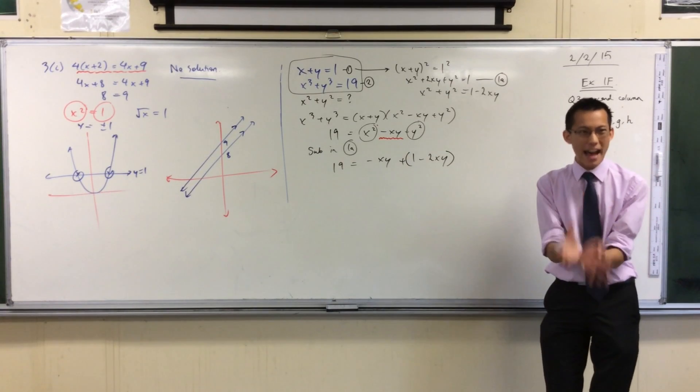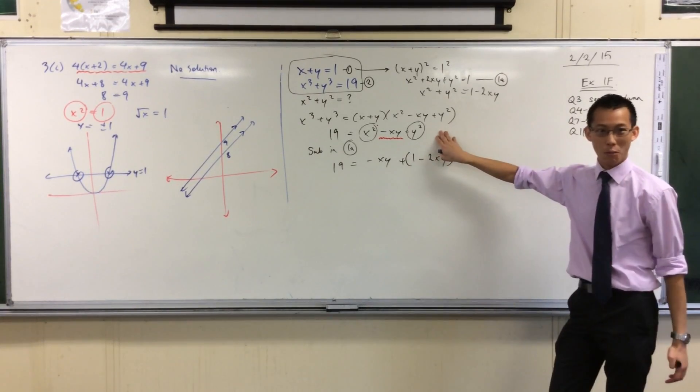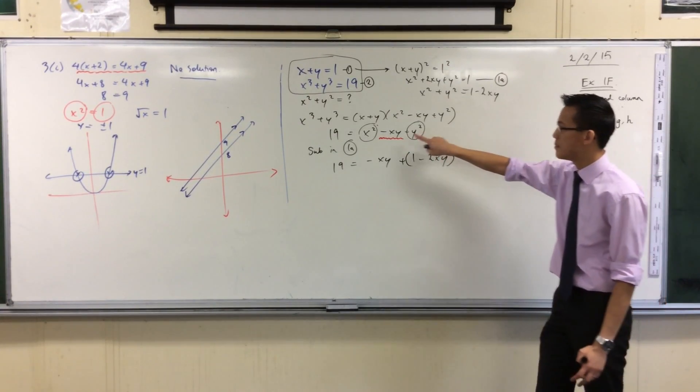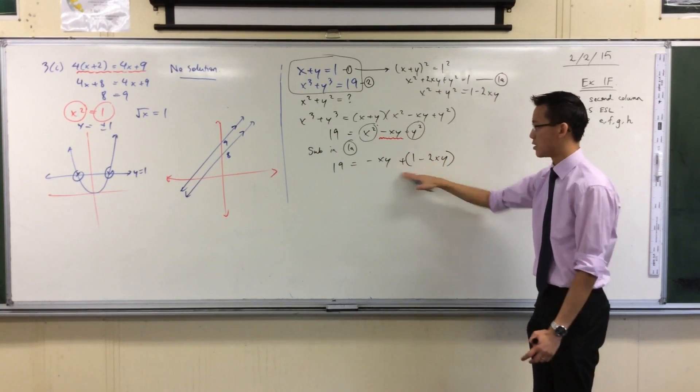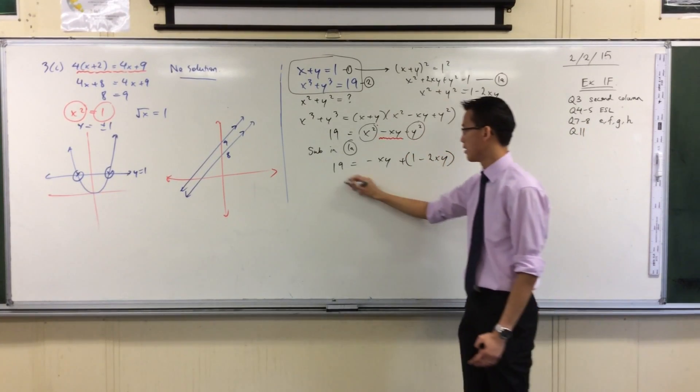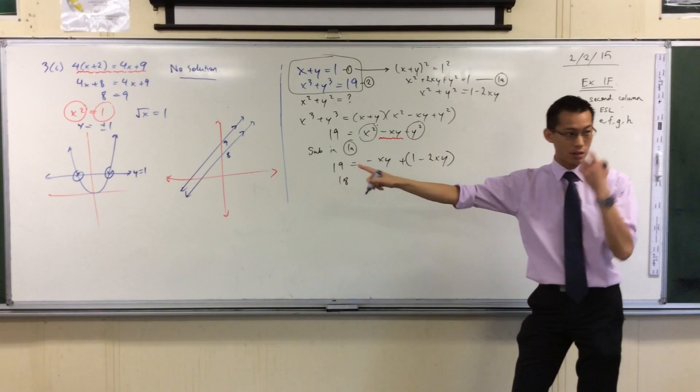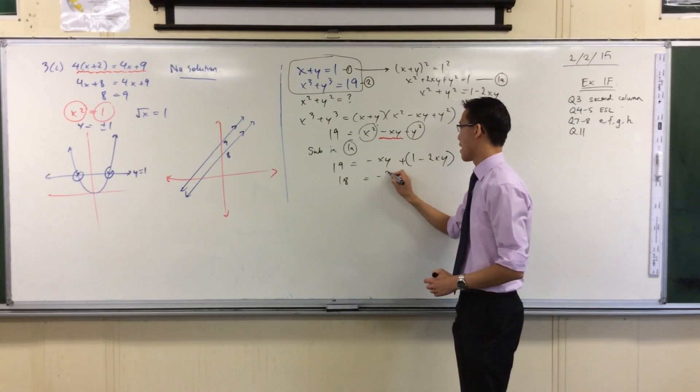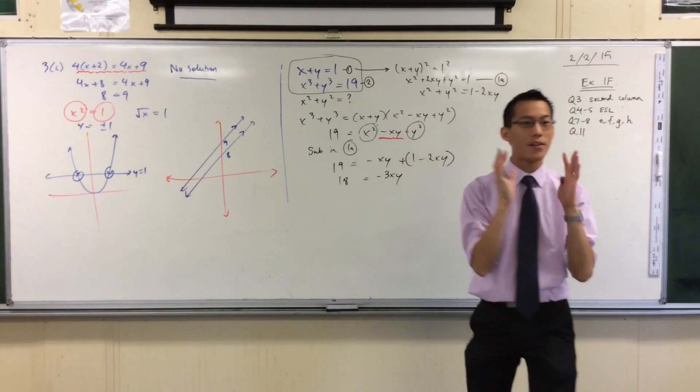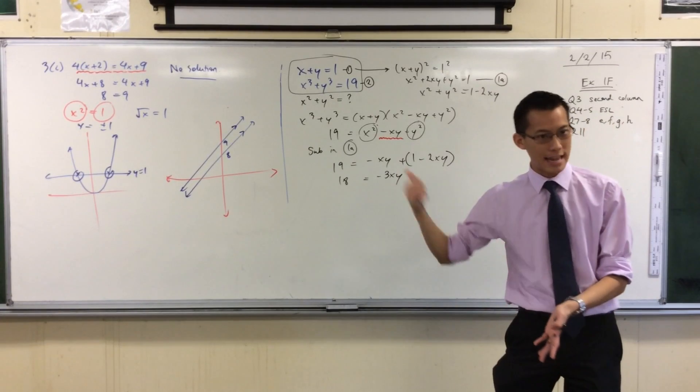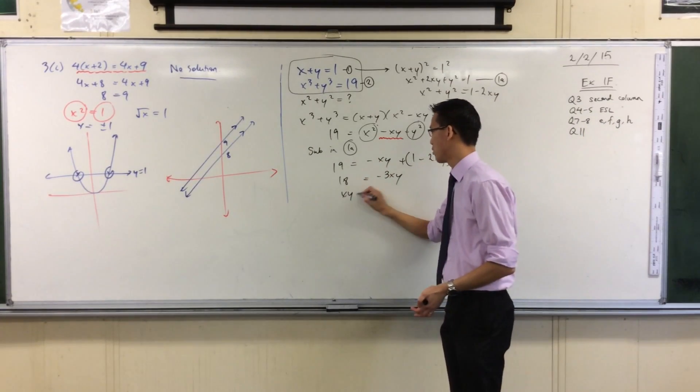Now you might think, oh, I've gone backwards because I've gotten rid of what I wanted, right? But what I'm doing is I'm eliminating this out of the equation because this I can work with. Have a look at it. You get an 18 over there because the one goes across, and you get a -3xy. Aha! Now I've isolated it. So now I can take that back to this line.